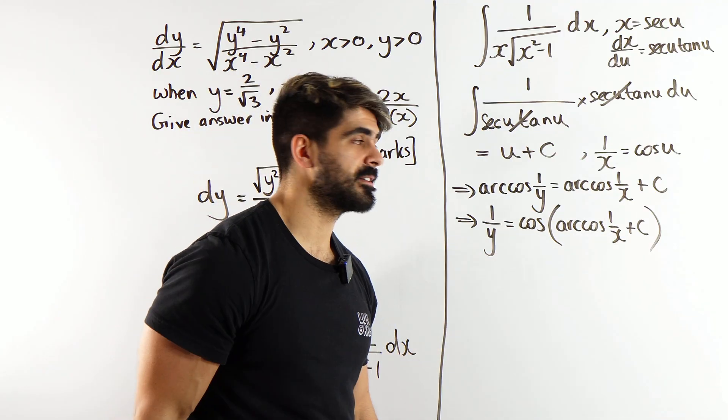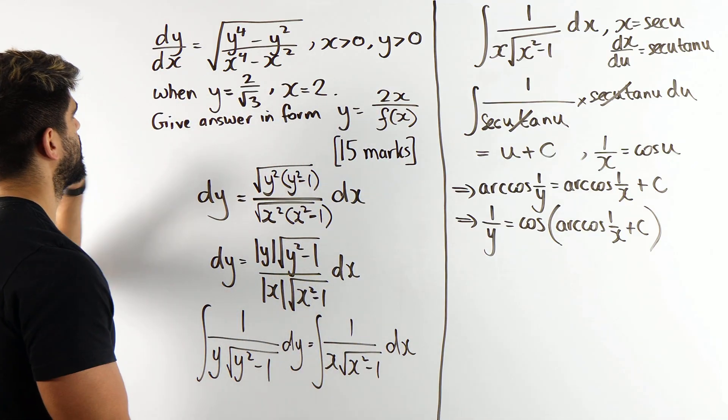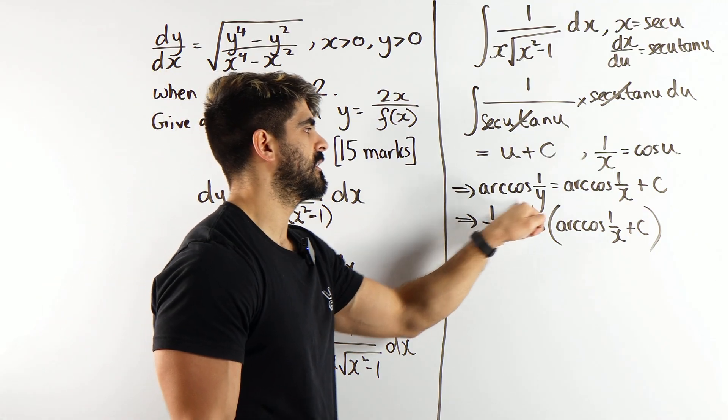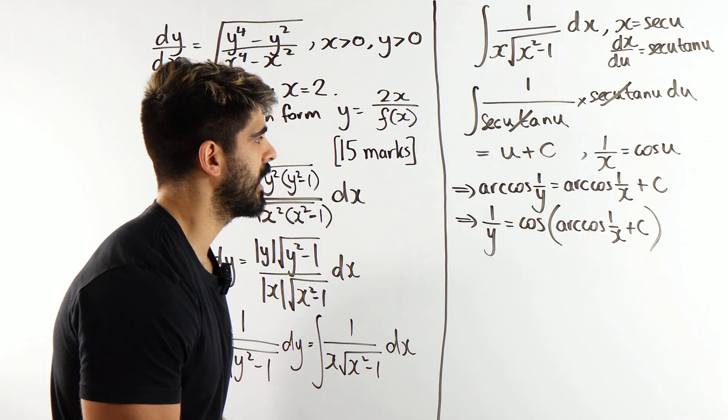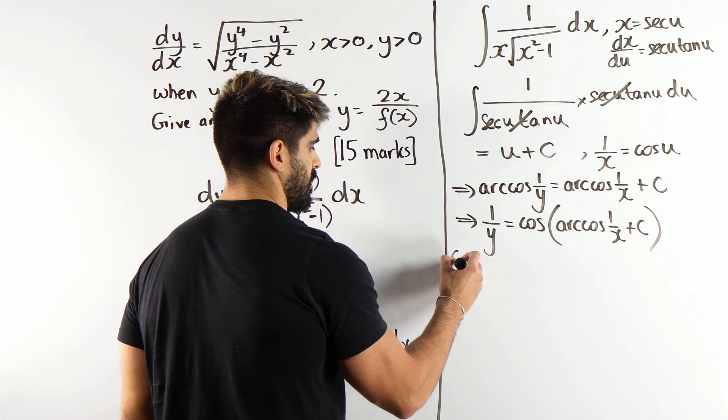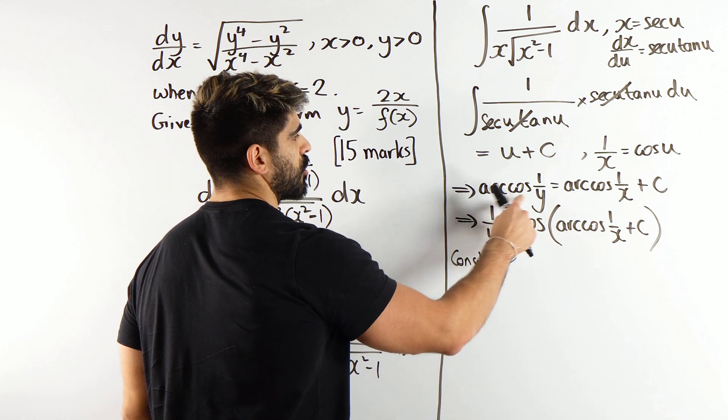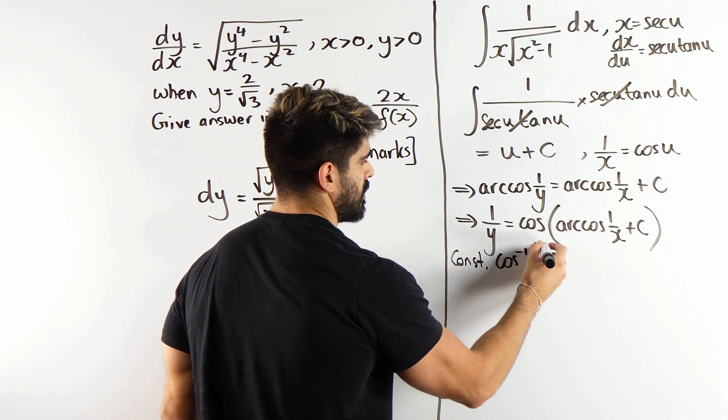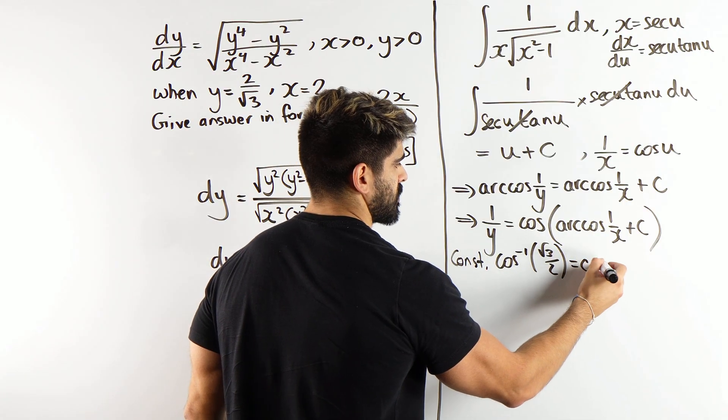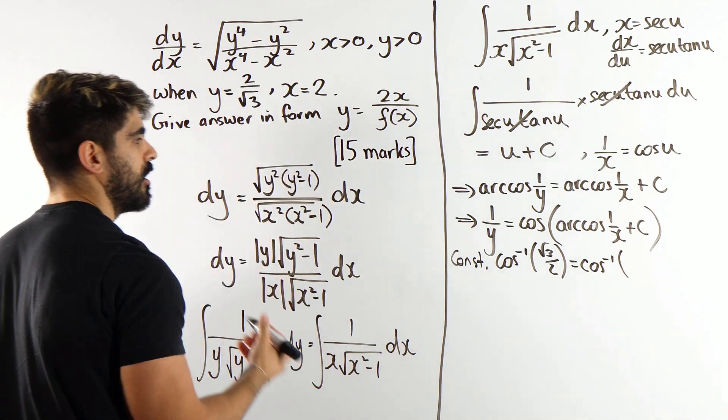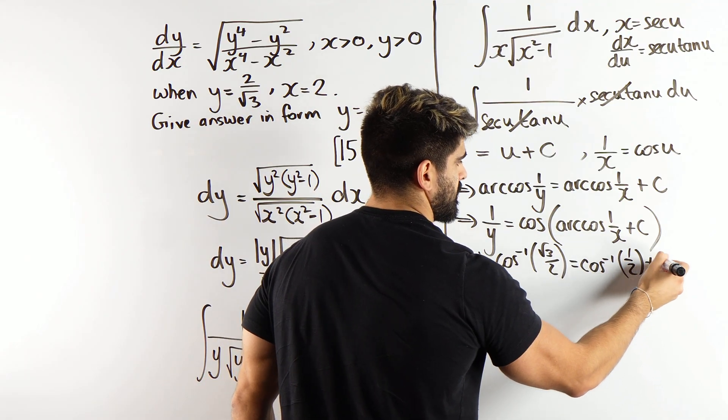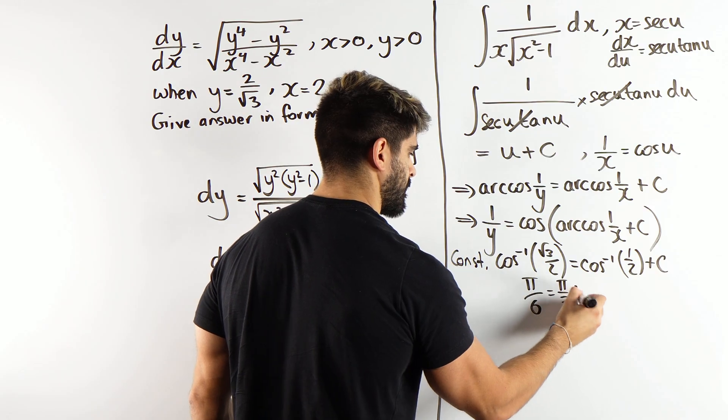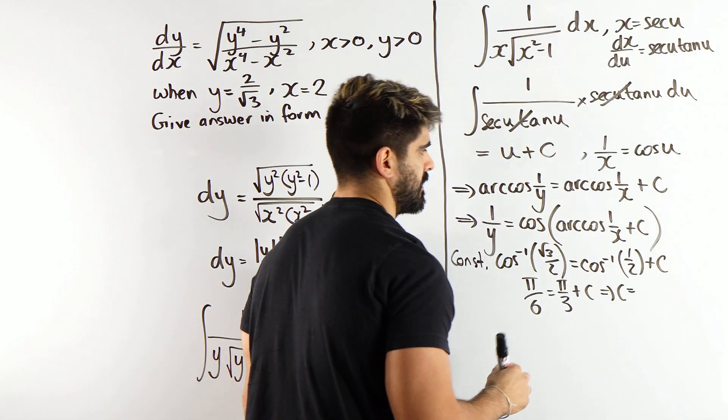But, if you guys might remember, I gave you some critical information here. When y is 2 over root 3, x is 2. We can go back to here and just work out what that c was and we will have no problems. So, we'll come back to this later. So, let's look at our constant. Arc cos of 1 over y. If y is this, 1 over y is root 3 over 2. So, I'm just going to write inverse cos root 3 over 2 is inverse cos of 1 over x, which would be a half, plus c. Inverse cos of root 3 over 2 is pi over 6. And that is pi over 3 plus c. So, c is minus pi over 6.